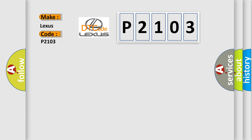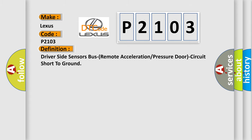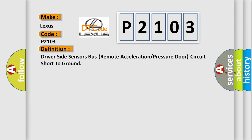The basic definition is: Driver side sensors bus remote acceleration or pressure door circuit short to ground. And now this is a short description of this DTC code.